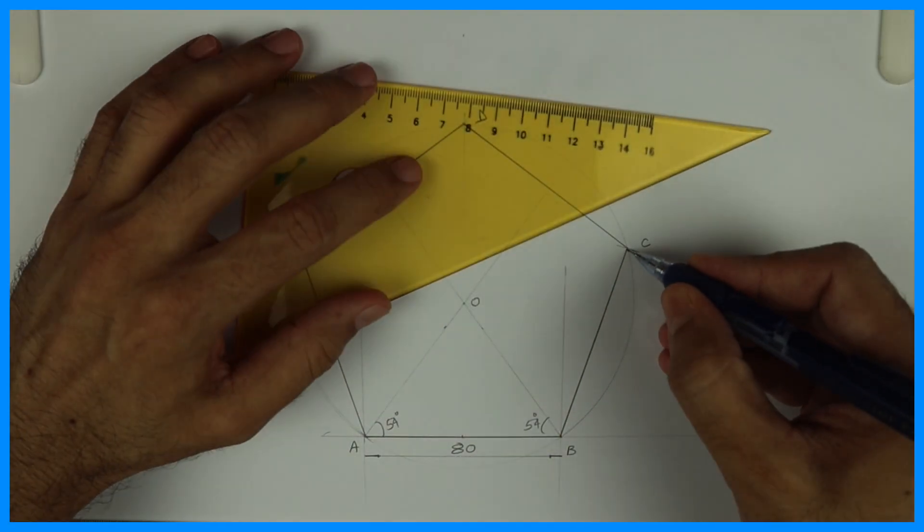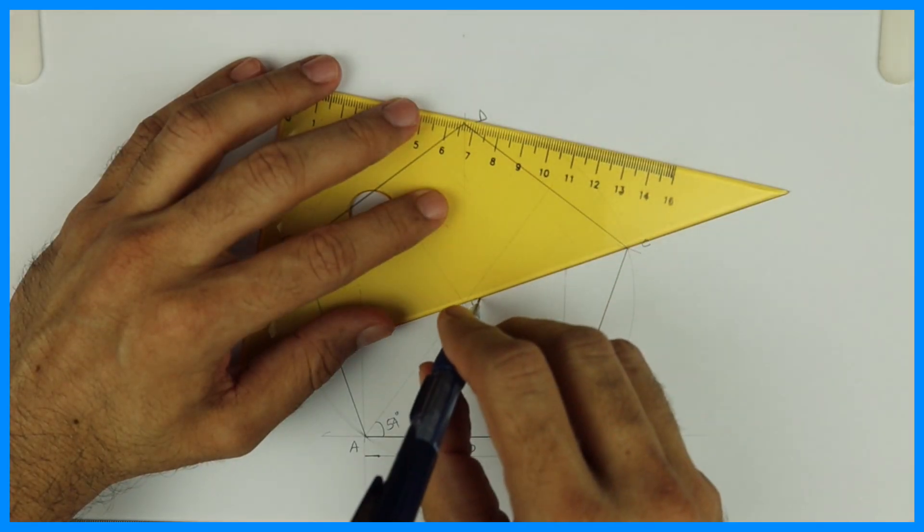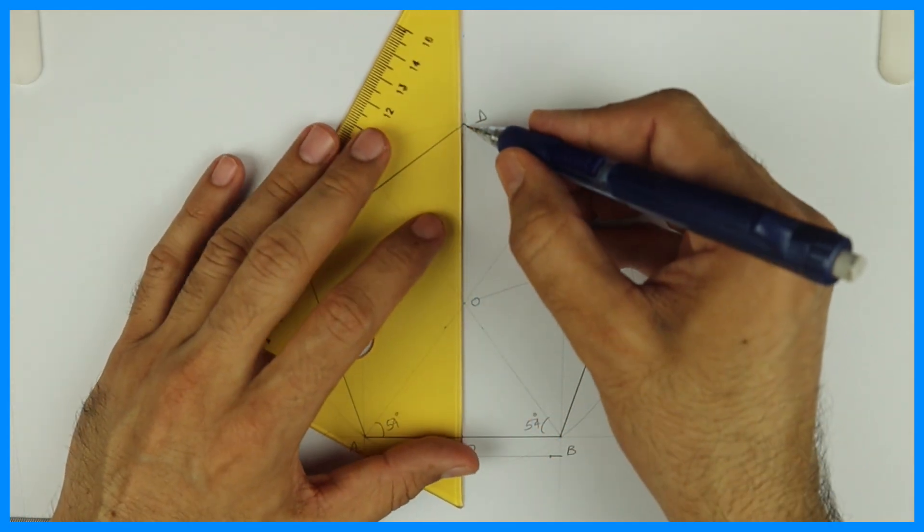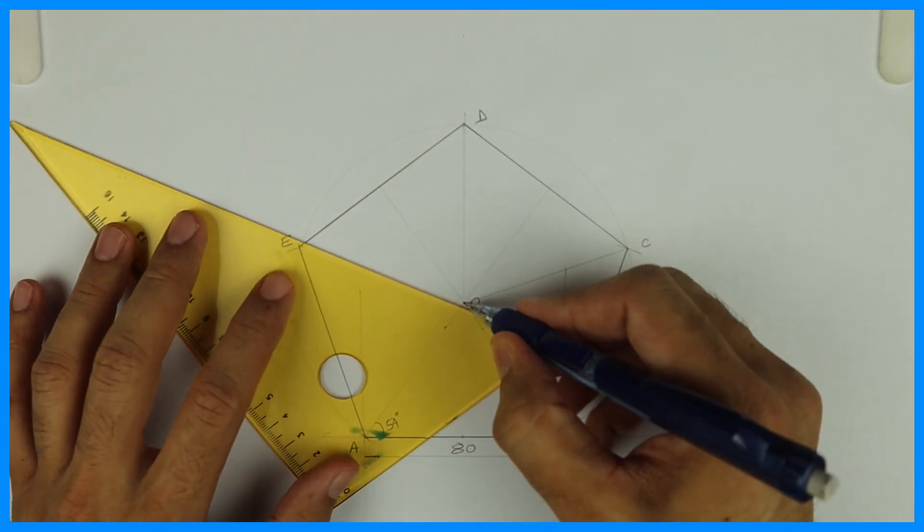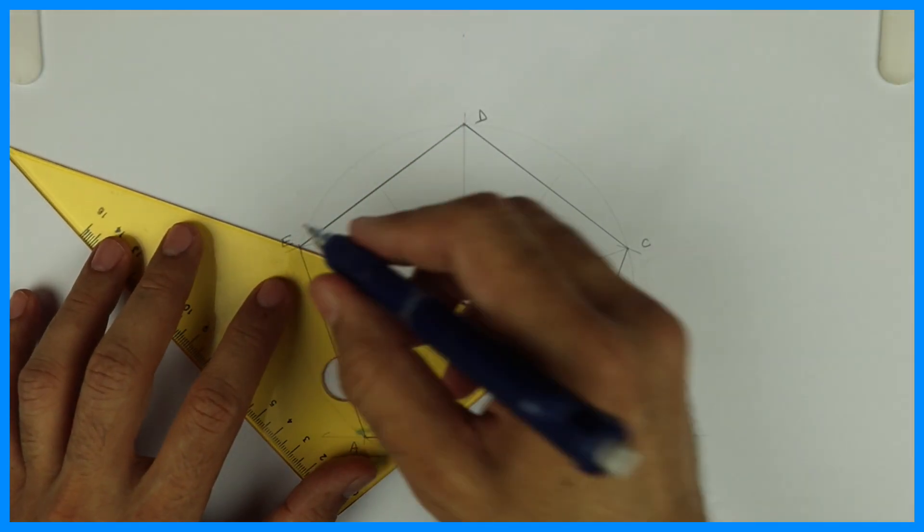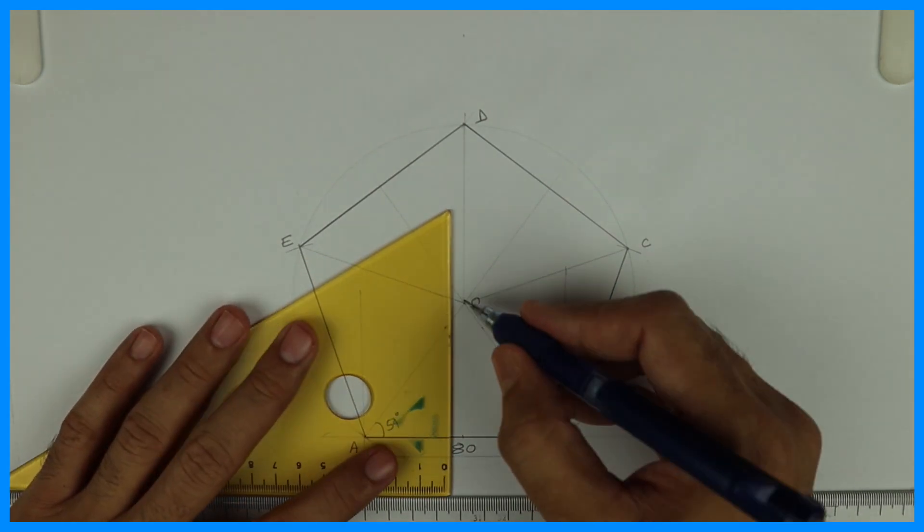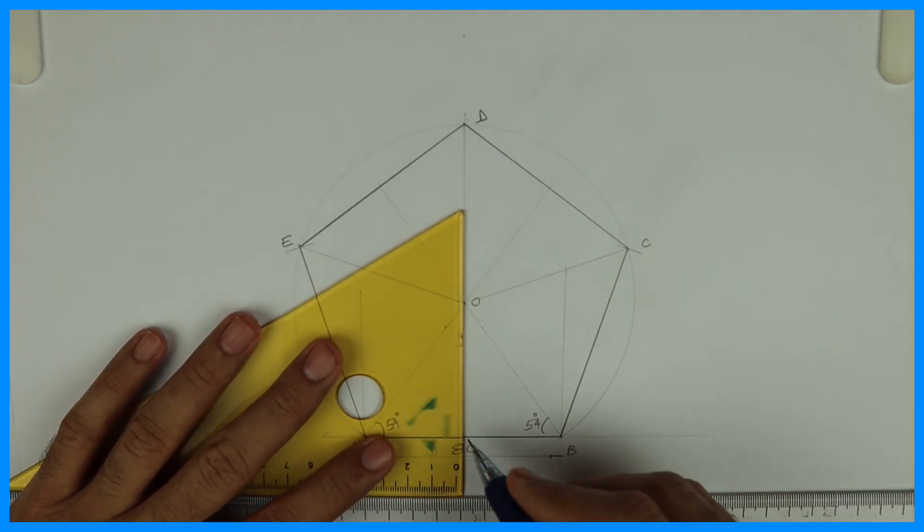Now we have five triangles inside this pentagon: OAB, OBC, OCD, ODE, and OEA. So we got five triangles. We'll draw the midpoint of all the sides.